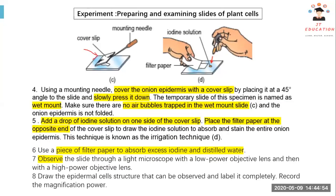We cover it with a cover slip slowly, using a mounting needle. After that, we put an iodine solution. Why do we use iodine solution? Because iodine solution is a pigment that is commonly used in staining the plant cell. After that, we lower down the filter paper and try to absorb the iodine solution — make sure it runs through our whole sample.